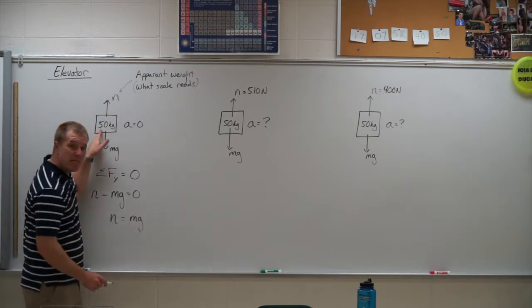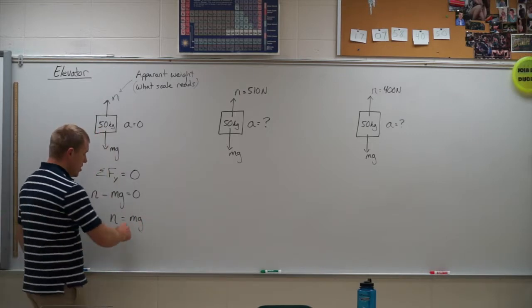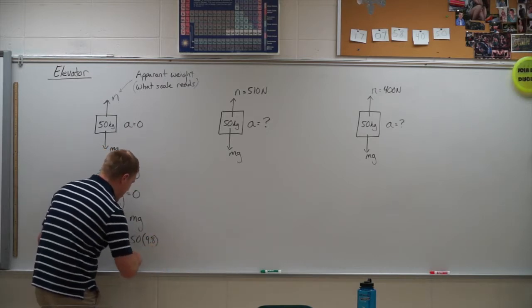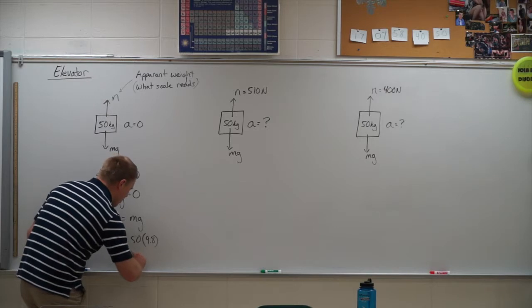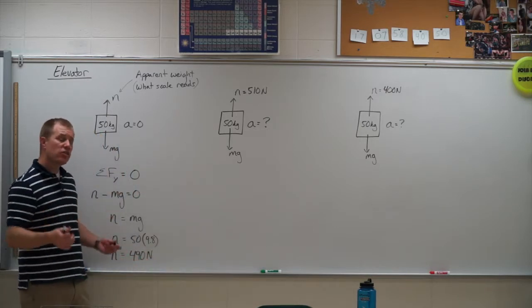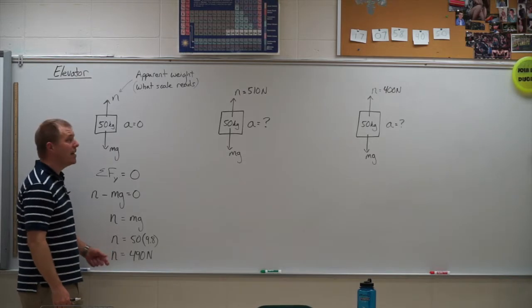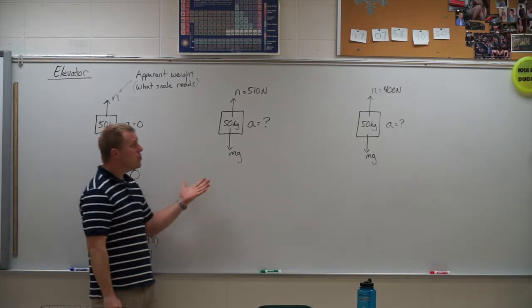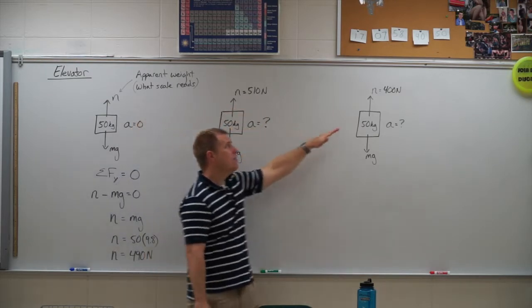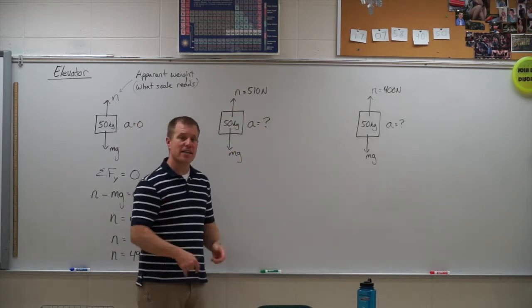And so in this case, they gave me the mass, it's 50 kilograms. So the normal force will equal 50 times 9.8. So the normal force will equal 490 newtons. So that's what the scale should read if the elevator is not accelerating. In these two other instances, the scale reads 510 newtons and 400 newtons. And I'm asked to find the acceleration.